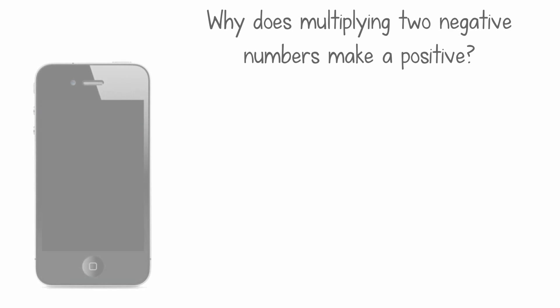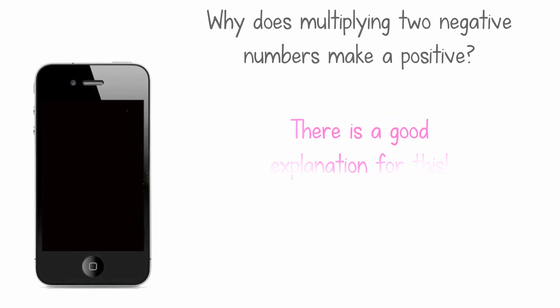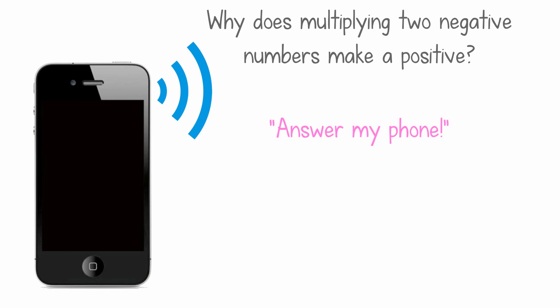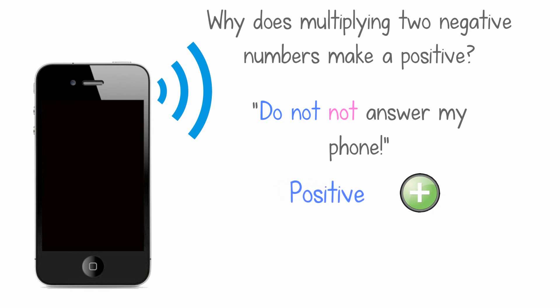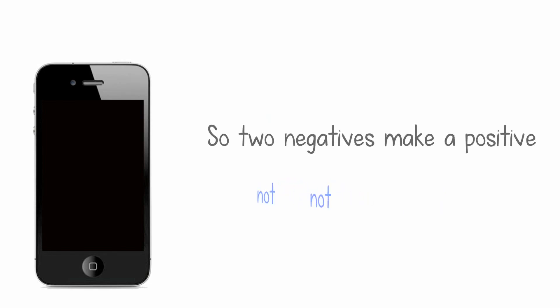Why does multiplying two negative numbers make a positive? There is a good explanation for this. Answer my phone. That's a positive. Do not answer my phone. That's a negative. Do not not answer my phone. That's a positive. So two negatives make a positive.